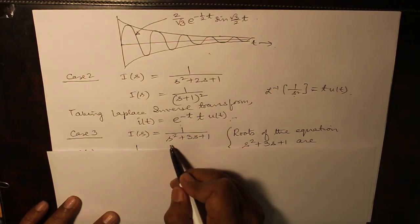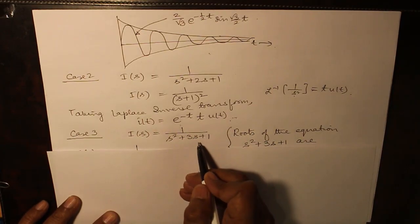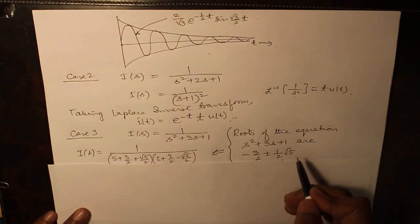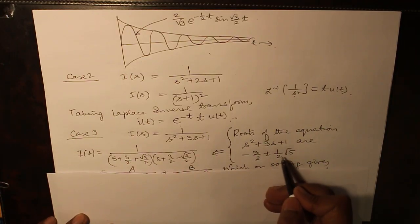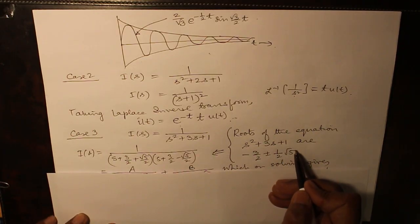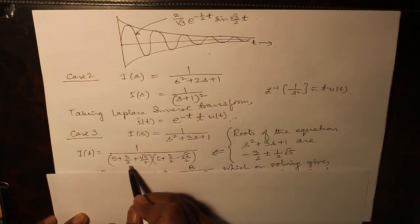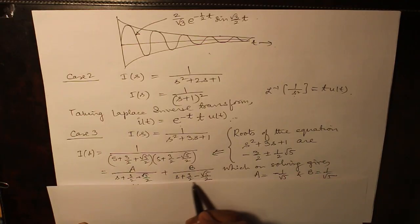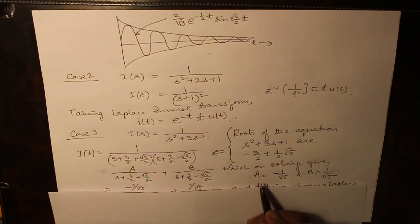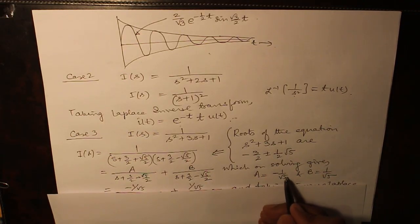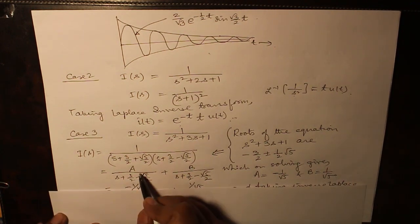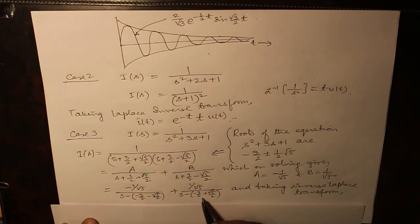Case 3 when I(s) equals 1 over s² plus 3s plus 1. The roots of the equation are minus 3/2 plus minus root half into root 5. These two terms we can write it as A over this plus B over this which on solving gives us by the normal process A equals minus 1/√5 and B equals 1/√5.